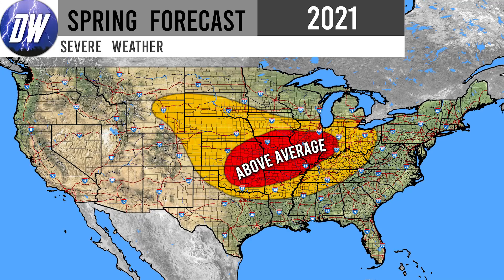Here's the updated severe weather forecast. In the yellow regions, expect near-normal or slightly above normal severe weather events and tornadoes. The red region is where conditions will be most favorable for severe weather compared to normal. Oklahoma and Kansas typically see great severe weather conditions, but I expect even more than typical this spring. With the La Niña in place, we generally expect more severe weather than normal throughout the spring months, making me very confident we'll see above average severe weather and above average tornadoes this season.